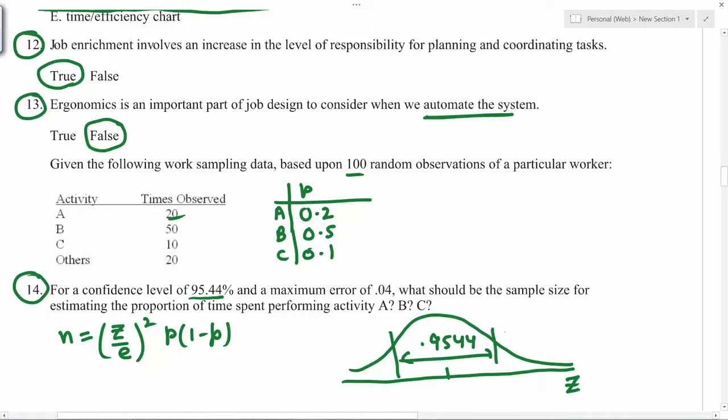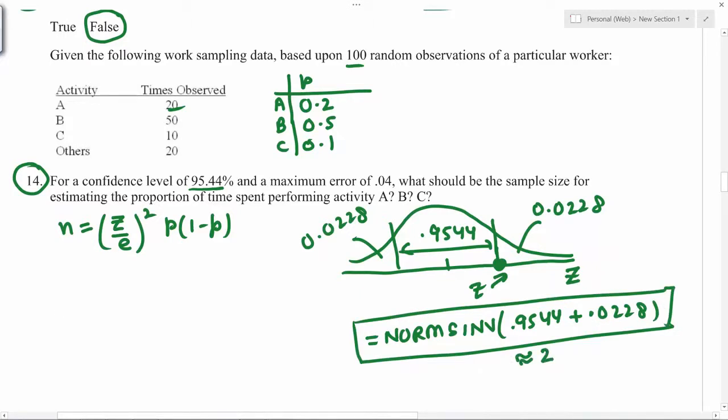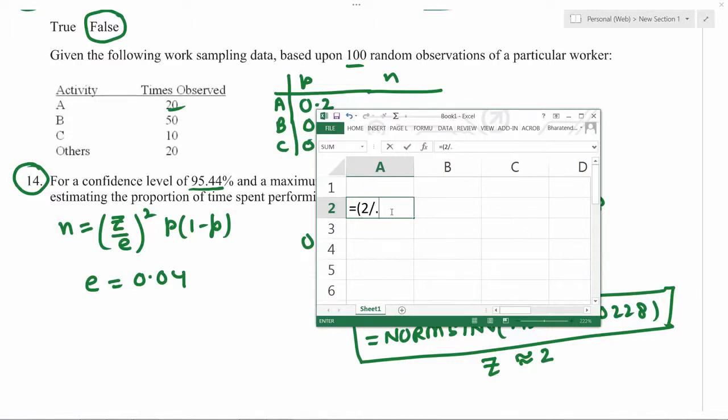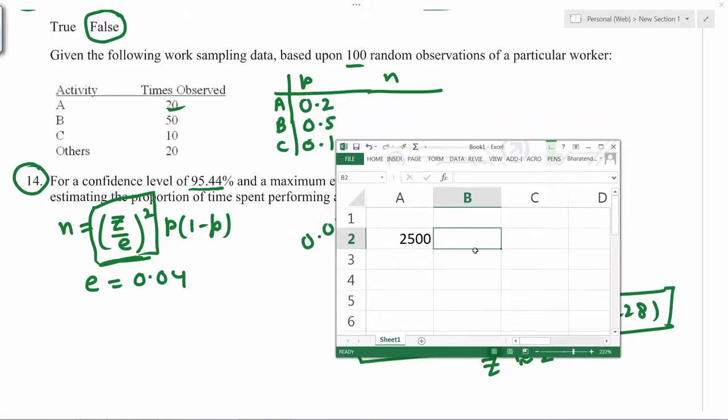Because the total area under the curve is 1, the remaining area that goes into each tail is 0.0228. Now we can calculate this point, which is the z value, by using Excel function S for standard normal distribution, and this is an inverse calculation, so INV. Area to the left of z is 0.9544 plus 0.0228 - this value you get approximately 2. So z is 2 and e is given as 0.04. Now we can plug in the values of p and obtain sample size. Equals, within brackets, z is 2 over 0.04 square - this is the first part - and then we multiply p times 1 minus p. The first p value is 0.2, equals this number times 0.2, and 1 minus p becomes 0.8, so 400.